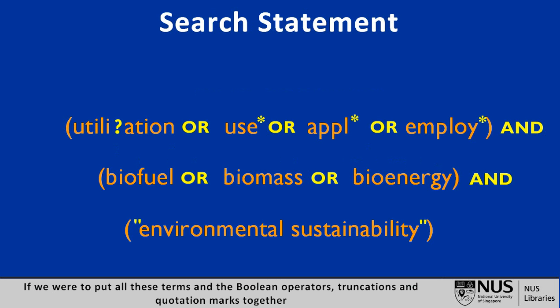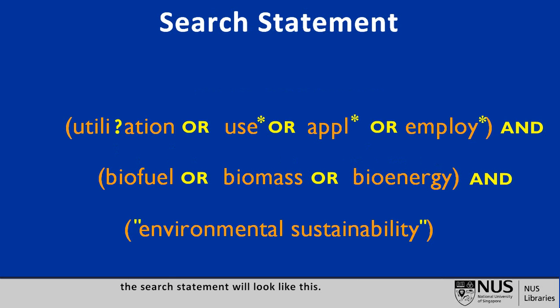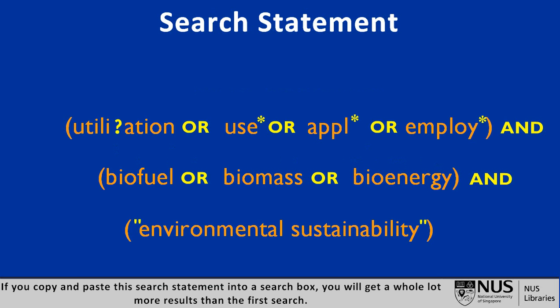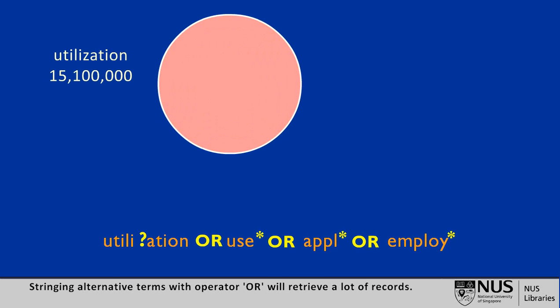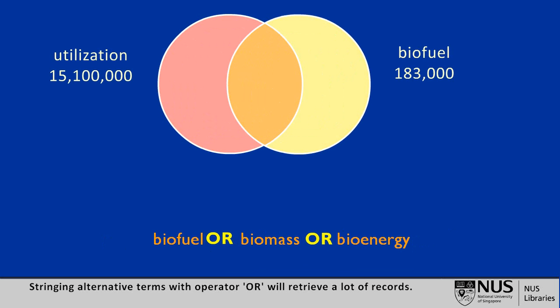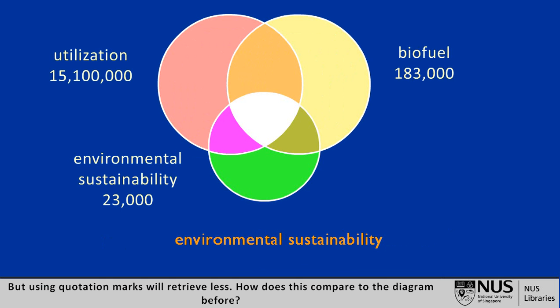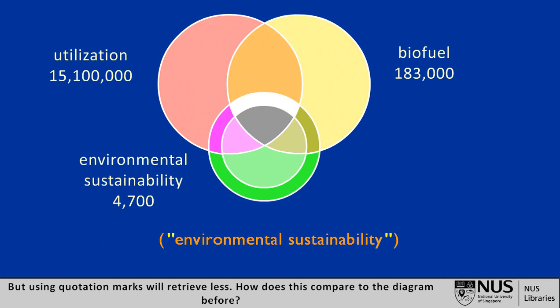If we were to put all these terms, Boolean operators, truncations, and quotation marks together, the search statement will look like this. If you copy and paste the search statement into a search box, you will get a whole lot more results than the first search. Let's look at the search represented in this diagram. Stringing alternative terms with operator OR will retrieve a lot of records, but using quotation marks will retrieve less.